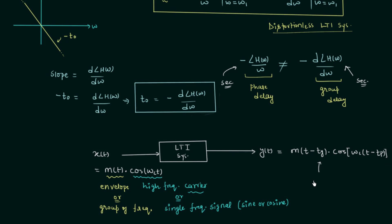Tg represents the group delay and Tp represents the phase delay. The unit of phase delay is also seconds. Whenever you have a multiple-frequency component there will be a group delay, and whenever you have a single-frequency component there will be a phase delay. Using the formulas you can easily calculate either one.